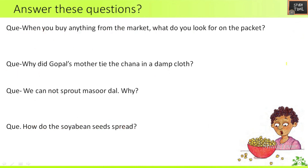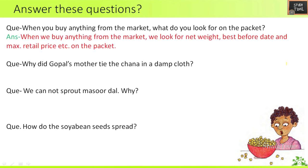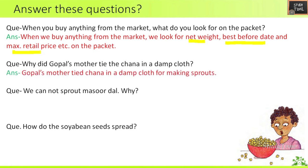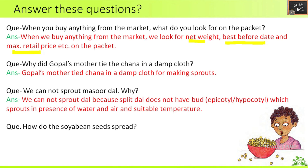When you buy anything from the market, what do you look for on the packet? We look for net weight, best before date, and maximum retail price on the packet. Next question — why did Gopal's mother tie the channa in a damp cloth? Gopal's mother tied the channa in a damp cloth for making sprouts.